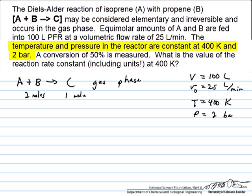This is an isothermal reaction so the temperature is constant at 400 Kelvin, and the pressure is also constant at 2 bar so we can ignore pressure drop. We measure a conversion of 50% and want to know what this means for the reaction rate constant.